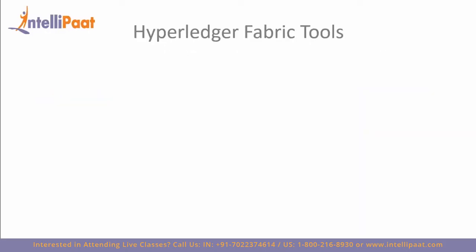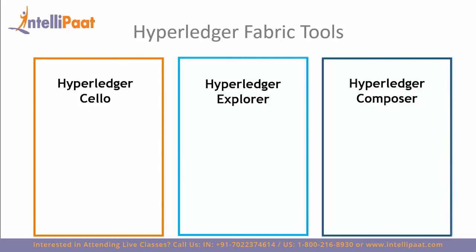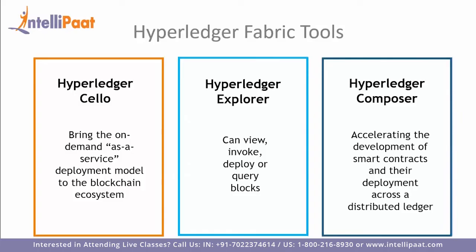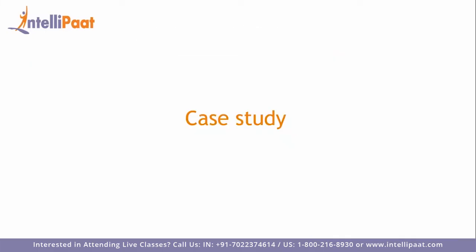Some of the key tools used in Hyperledger Fabric are Hyperledger Cello, Explorer, and Composer. Cello aims to bring an on-demand, as-a-service deployment model to the blockchain ecosystem, reducing the effort required for creating, managing, and terminating blockchains. Hyperledger Explorer can view, invoke, deploy, and query blocks or relevant information stored in the ledger. Hyperledger Composer is a collaboration tool for building blockchain business networks and accelerating the development and deployment of smart contracts.